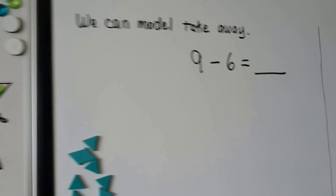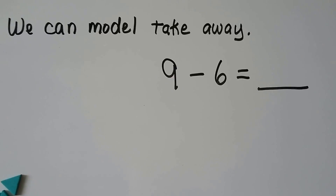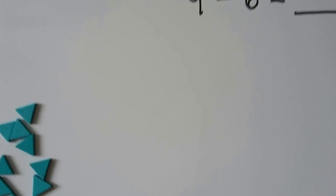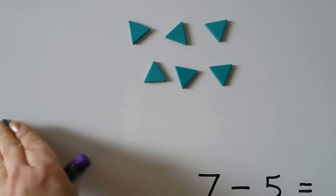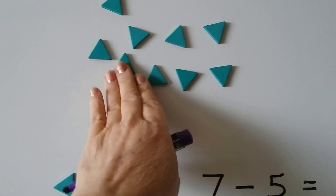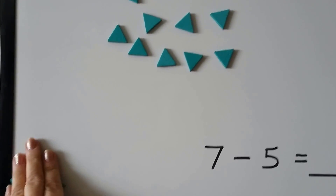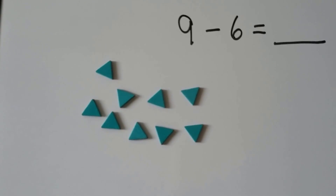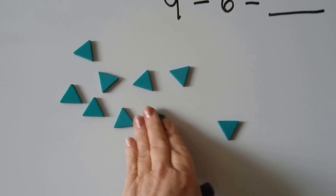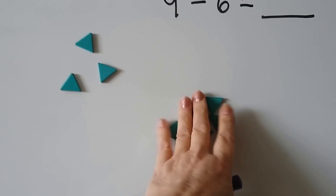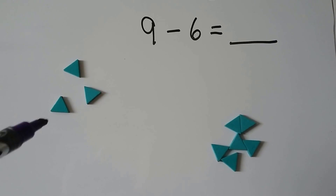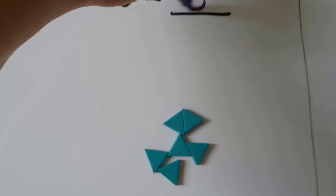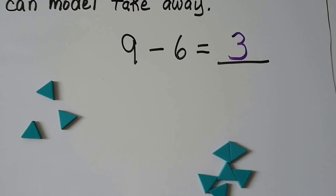We can model take away: nine minus six equals — we get nine counters: one, two, three, four, five, six, seven, eight, nine. We have nine counters and we need to take away six: one, two, three, four, five, six. We take these away. How many are left? One, two, three. Three are left.